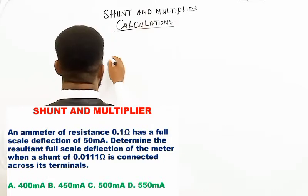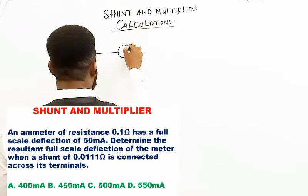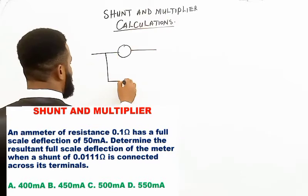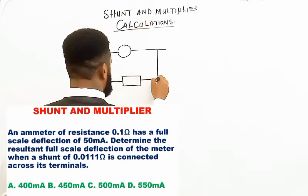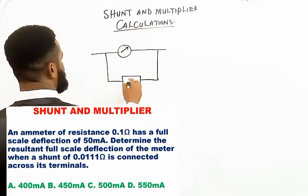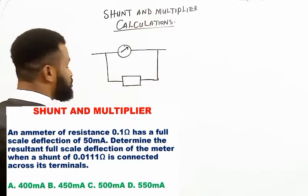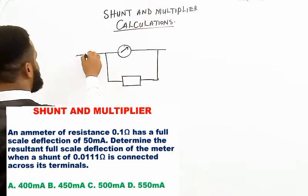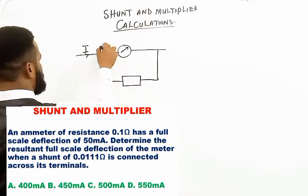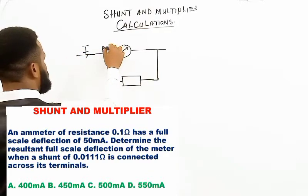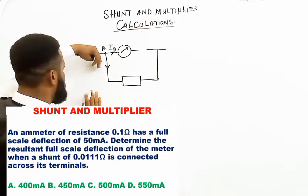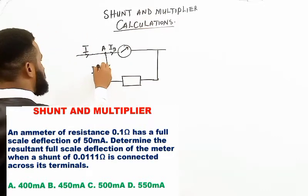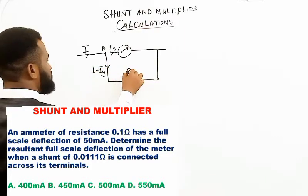A shunt is a resistor connected in parallel to a galvanometer that helps the galvanometer measure a bigger current. When current comes into junction A, the current through the galvanometer is Ig, and the current through the shunt is I minus Ig. The resistance of the shunt is Rs.